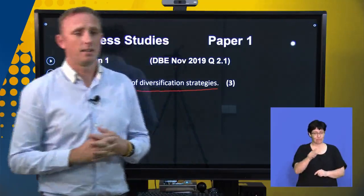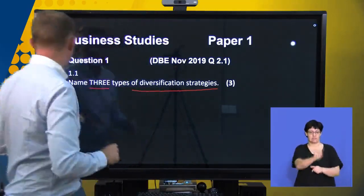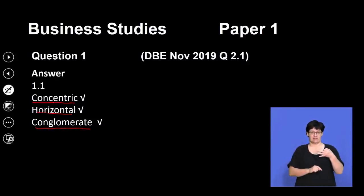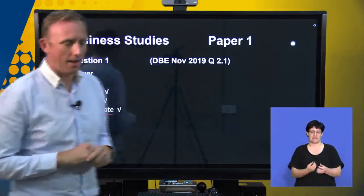In this question, they're asking us for our diversification strategies. The first one is concentric diversification, then horizontal diversification, and then we finally have conglomerate diversification. Just make sure you've got an understanding of the three different strategies that you can get, and also make sure — I can't emphasise this enough — make sure you understand all the different types of strategies that a business can have.